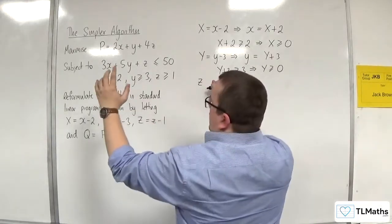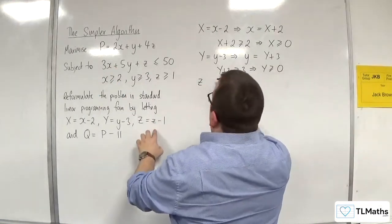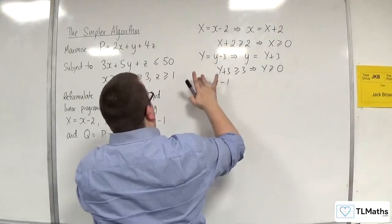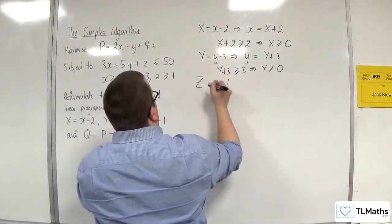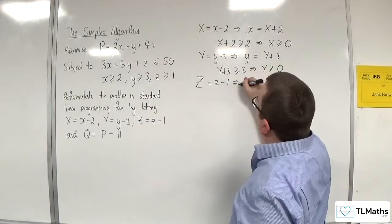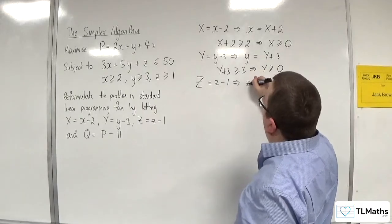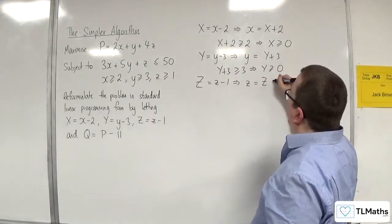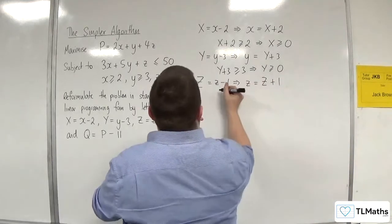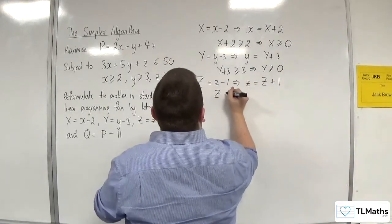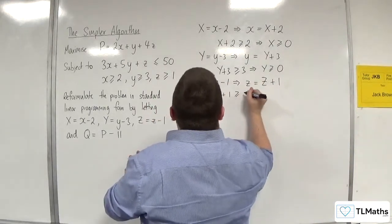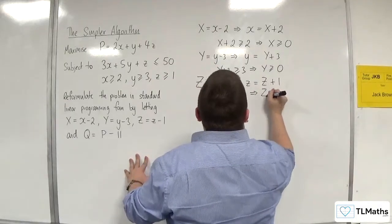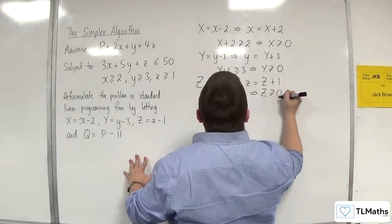Capital Z equals little z take away 1, so lowercase z is going to be capital Z plus 1. So Z plus 1 ≥ 1, and therefore capital Z ≥ 0.